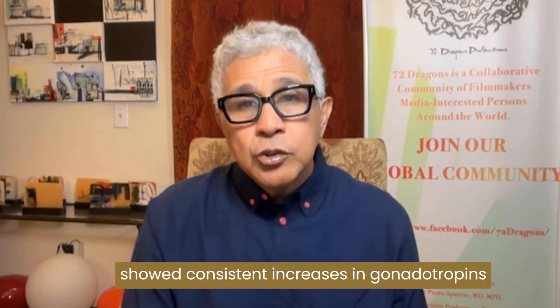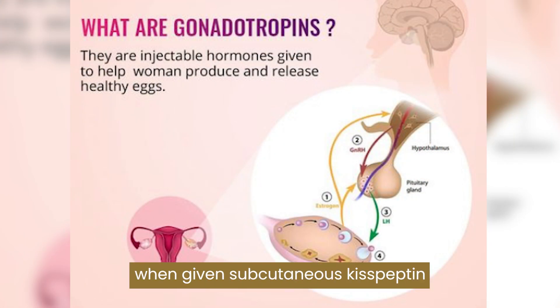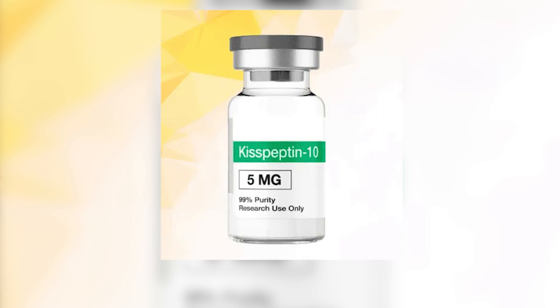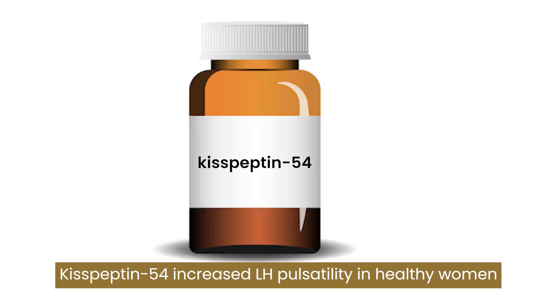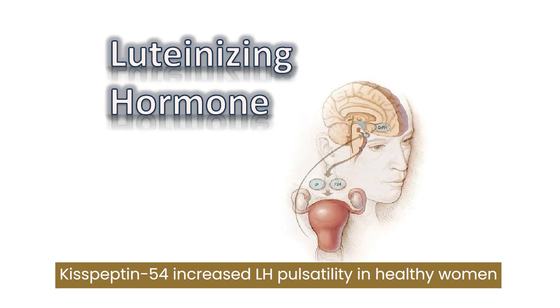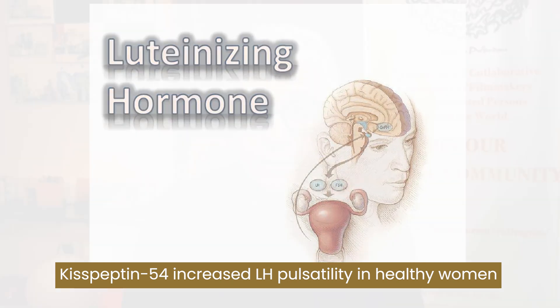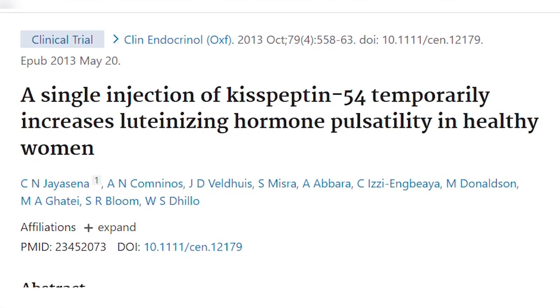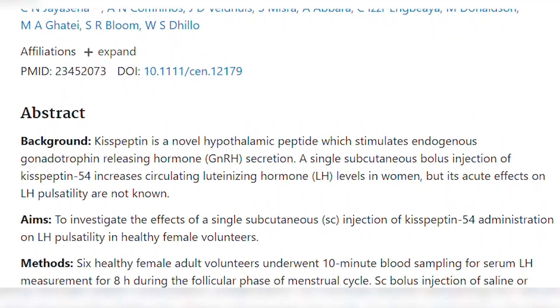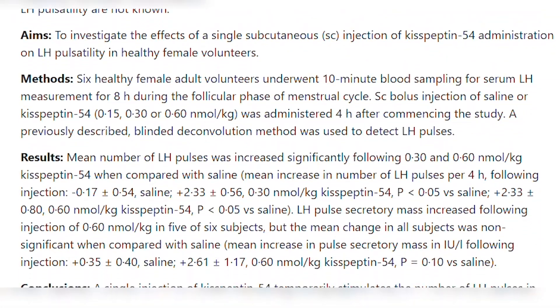Women with hypothalamic amenorrhea showed consistent increases in gonadotropins when given subcutaneous Kisspeptin twice a week for 8 weeks. Kisspeptin-54 increased luteinizing hormone pulsatility in healthy women and those with hypothalamic amenorrhea. Its continuous infusion restored luteinizing hormone pulsatility in individuals with a mutation in genes encoding NKB.